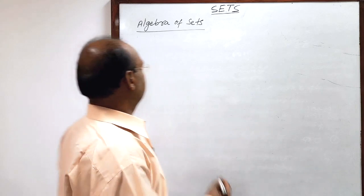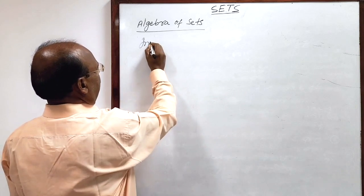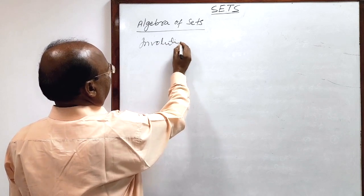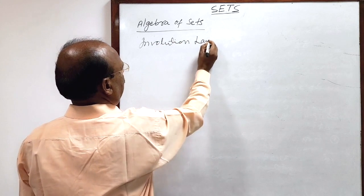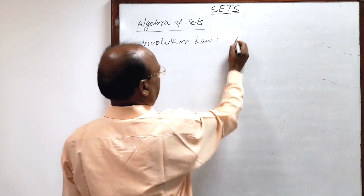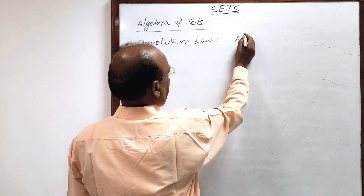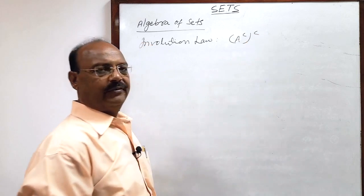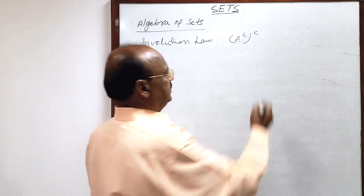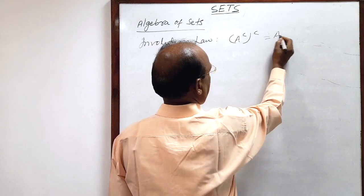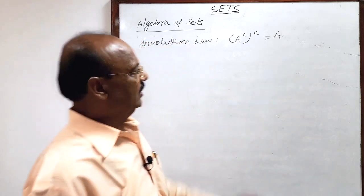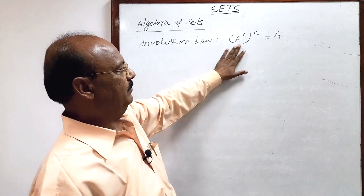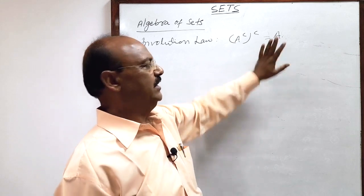The involution law involves a double complement: the complement of a complement is equal to set A itself. Let us prove that complement of A complement is equal to set A itself.